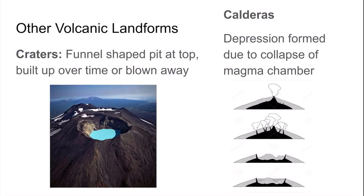In addition to volcanoes themselves, volcanic activity can form other types of landforms. At the top of volcanoes, there is a funnel-shaped pit called a crater, formed as pyroclastic material gradually builds up or when eruptions blow away part of the mountain. Bigger depressions are called calderas, which happen whenever a magma chamber collapses over time. For example, the Mount St. Helens eruption resulted in a caldera — it lost a huge amount of its height when it exhausted much of its magma chamber and collapsed.